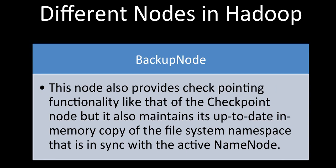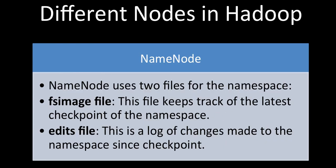The Backup Node also provides checkpointing functionality like the Checkpoint Node, but additionally it maintains an up-to-date in-memory copy of the file system namespace, kept in sync with the active NameNode. Unlike the Checkpoint Node, the Backup Node keeps a live in-memory copy of whatever is coming into the NameNode, maintaining the same copy within its own system. These are the key differences between the NameNode, Checkpoint Node, and Backup Node.